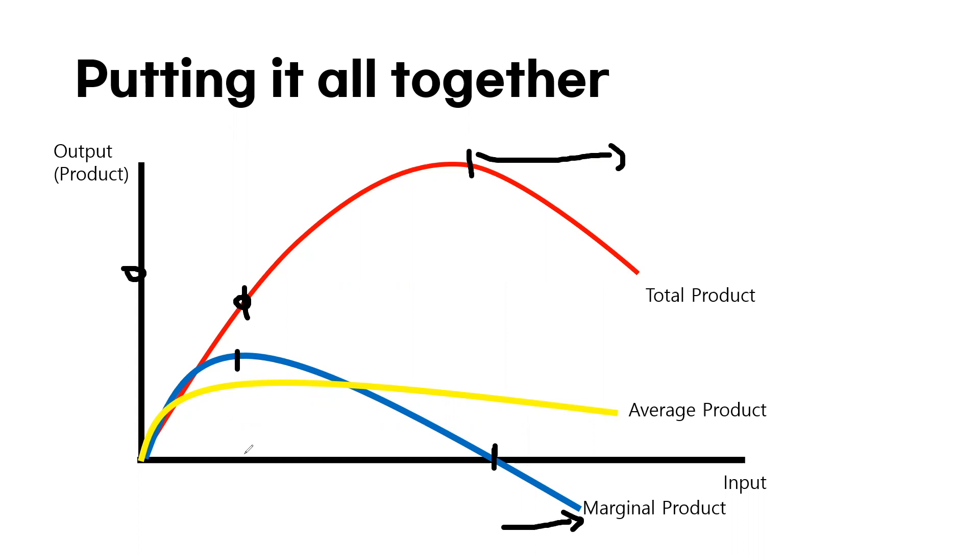What's truly important is you have to split through this graph, see where the marginal product starts to decrease. We have to understand the relationship between the marginal product and total product. And most important, you have to remember all concepts so that you don't forget.